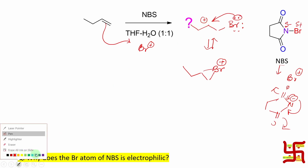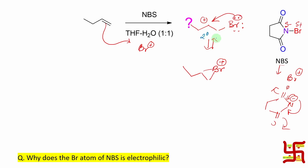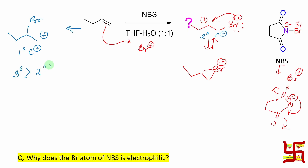Now, why is the bromonium ion produced at this particular carbon? This can be answered based on stability: this is a secondary carbocation. If attack happened in the other direction, bromine would be attached here and this would be a primary carbocation. Remember, secondary carbocations are more stable than primary. The overall stability order is: tertiary > secondary > primary > methyl.